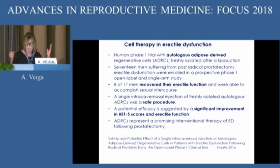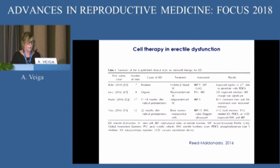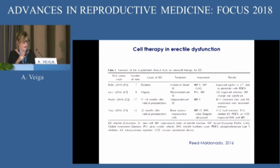Regarding erectile dysfunction, there is a 2016 paper — a human phase one trial with autologous adipose-derived mesenchymal stem cells — showing good results in which men recovered erectile function. It seems to be a safe procedure with significant improvement in scores used to measure erectile function. A review paper shows the different published studies, with a not very high number of men treated, but results seem good enough, though still very preliminary.